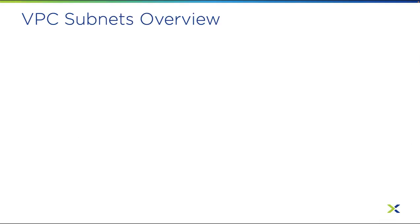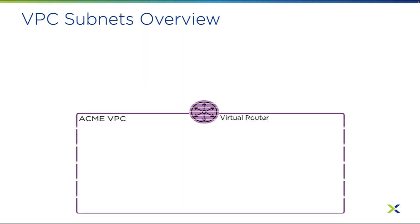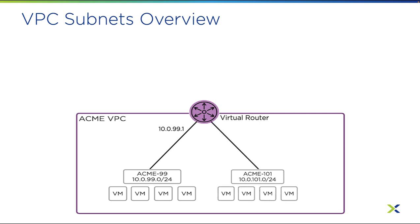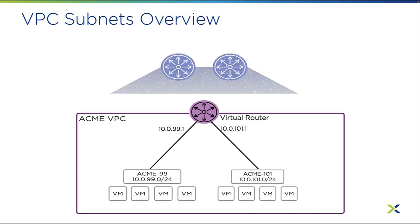Let's start with a quick overview of the different types of subnets we use with our VPCs. The first is the overlay subnet. You can have one or more overlay subnets in a VPC. Overlay subnets are private and can only be attached to one VPC, not shared amongst multiple VPCs.